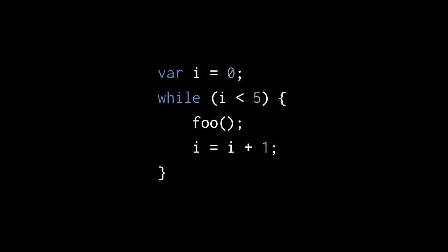For this while loop, first we declare a counter variable i with the initial value zero, then the condition tests whether i is less than five, and then inside the loop we call the function foo, and then increment the variable i by one. So, this loop will call foo five times.